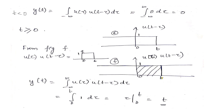Working out the integral for case 2: y(t) = integral from 0 to t of 1 · 1 dτ. The limits change from 0 to t because the signal exists only in that region. On integration, y(t) = t for t ≥ 0.